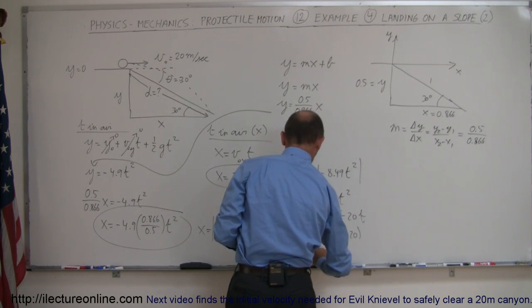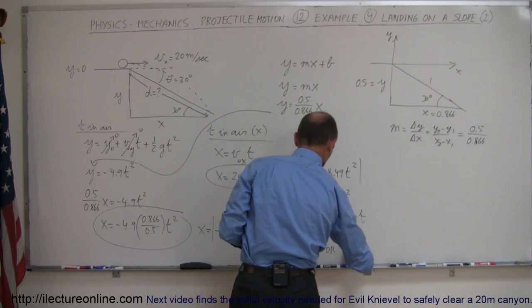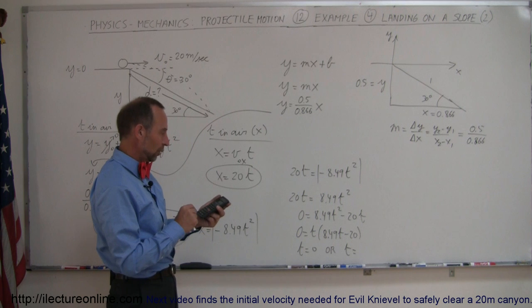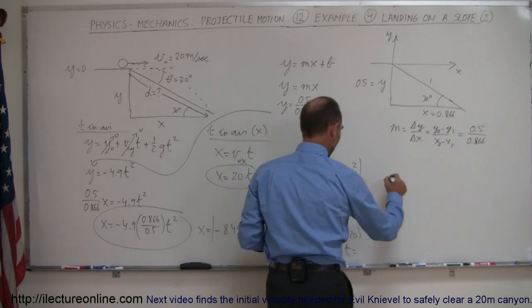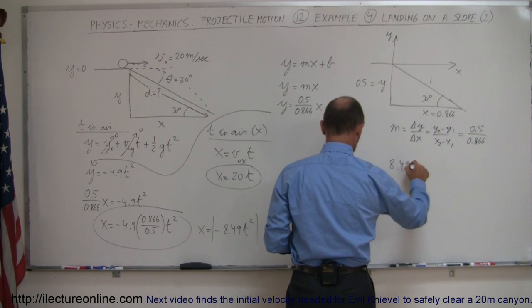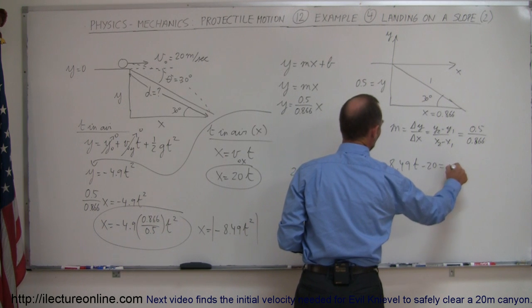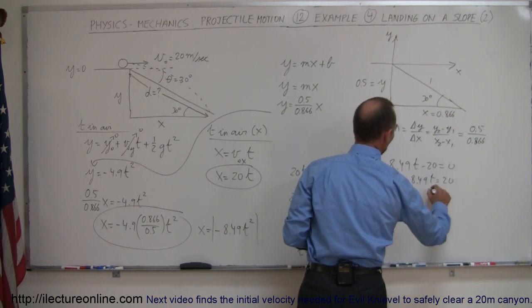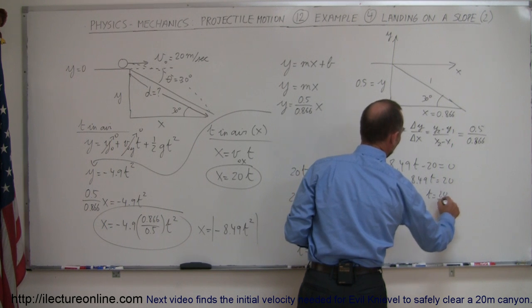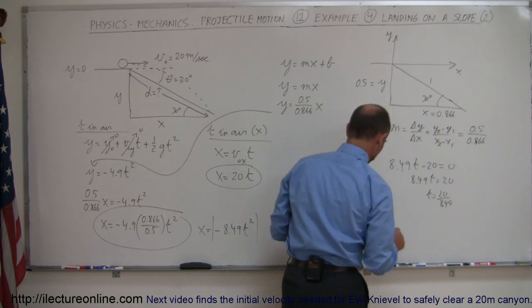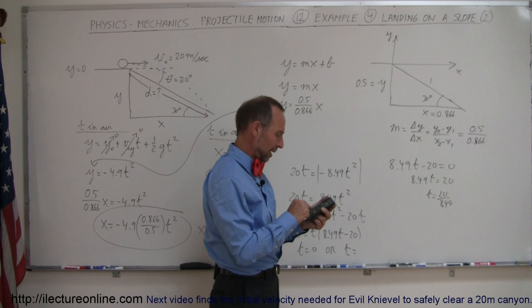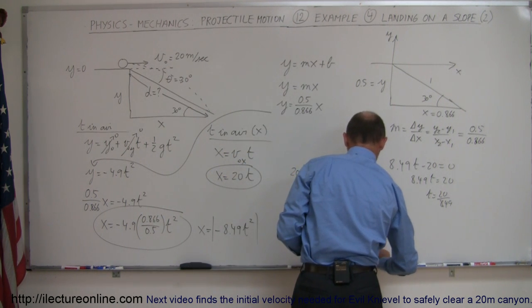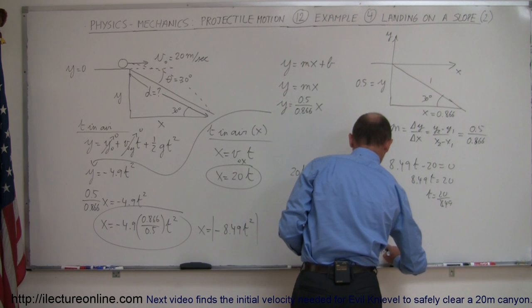So what that means is I'm going to end up with 8.49t minus 20 equal to 0, or 8.49t equals 20, or t equals 20 divided by 8.49. So 20 divided by 8.49 equals 2.36, 2.36 seconds. Okay, now I've found how long that object will be in the air.